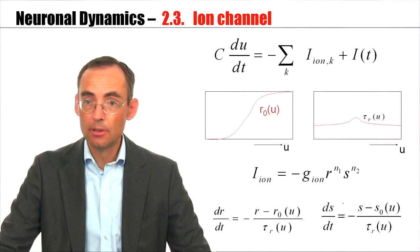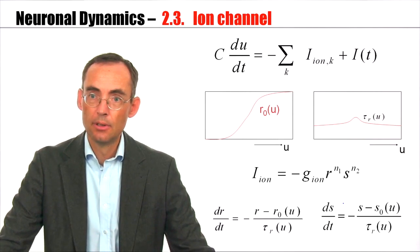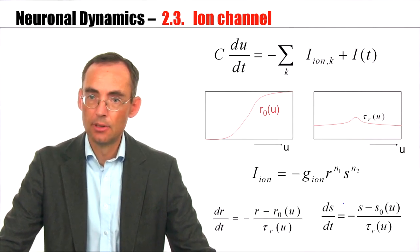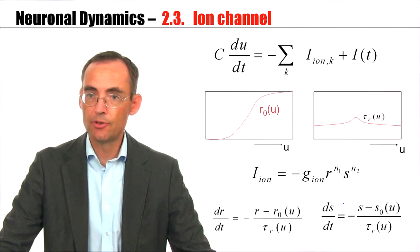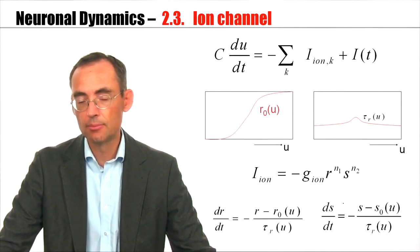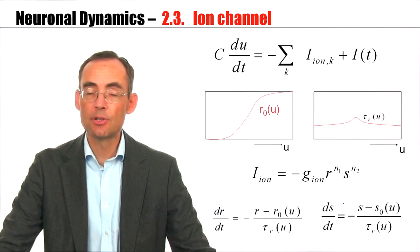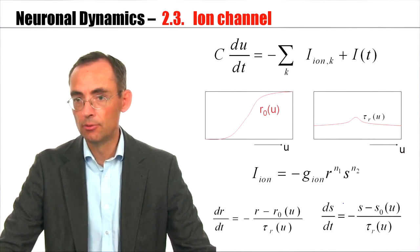The beauty of the experiments of Hodgkin and Huxley consisted in the fact that they were able to measure, for each gating variable, the stationary value, for example, N0 of U, for potassium, together with a time constant, tau_n of U, for potassium.